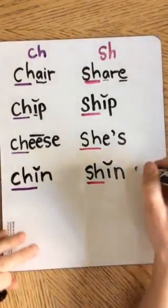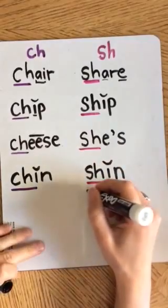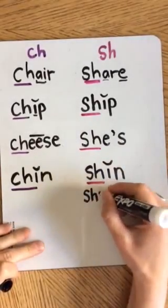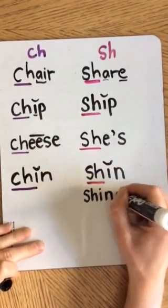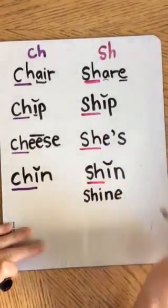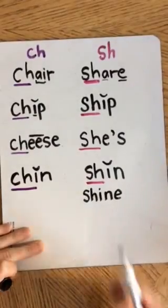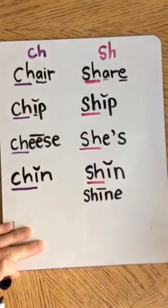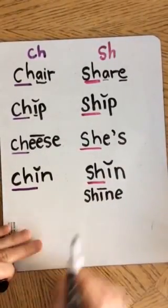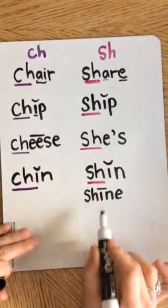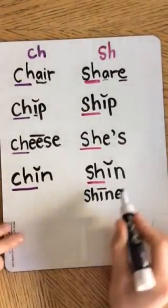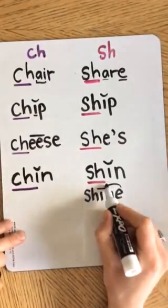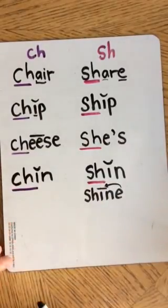What would happen if we put an E on the end of this word? It would become SHINE, like the sunshine, because this E makes the I say its name.